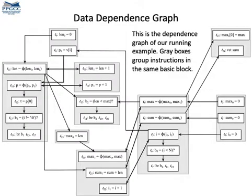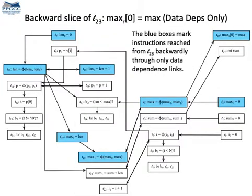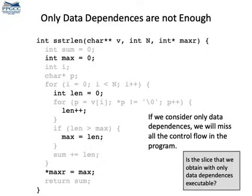Considering the example we had seen before, this is the dependence graph — here we are considering only data dependencies. To compute the slice of the last assignment, which is labeled 23, we can traverse the dependence graph backwards, starting at label 23. The blue instructions are the instructions that we visit in this backward traversal. If we map those instructions back into source code, this is the subset of the program that we get for the slice using only data dependencies.